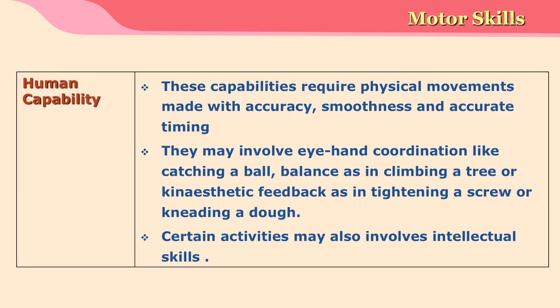Motor skill capabilities require physical movements made with accuracy, smoothness, and accurate timing. They may involve eye-hand coordination (such as catching a ball), balancing (such as climbing a tree or skateboarding), or kinesthetic feedback — as in tightening a screw, where you sense how far the screw has gone in and whether it can be twisted further.